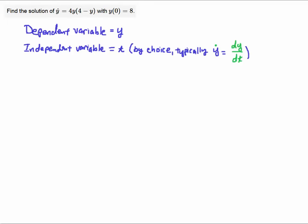So, first thing we have to decide on here is how we're going to separate the equation. Notice that the dependent variable is Y. The independent variable, I'm going to choose T. You could pick X if you want, but because I see the dot over the Y, typically Y dot implies dY over dT. Now I'll rewrite the equation that way. dY over dT equals 4Y times 4 minus Y. And then I'll do the separation.